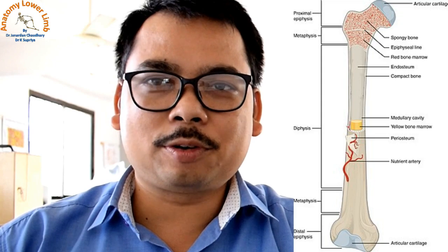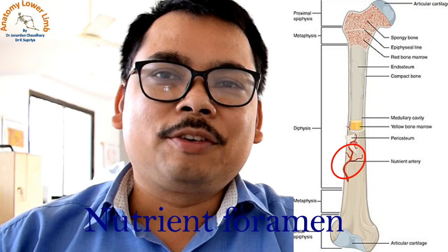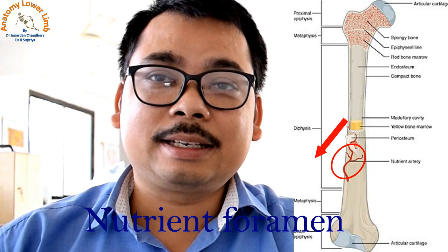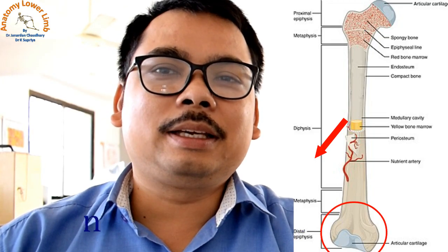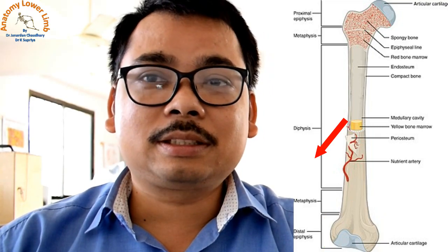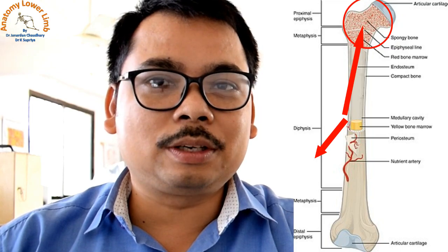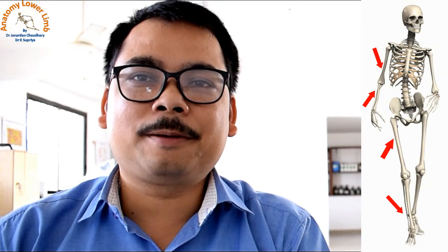The nutrient foramen in the shaft has a special feature: it determines the growing end. In the humerus, the nutrient foramen in the shaft is directed towards the elbow joint. So the growing end is always opposite to the direction of the nutrient foramen — meaning the growing end of the humerus is at the upper end.